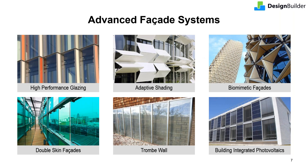Advanced facade systems involve variations on the basic facade elements. These include high-performance glazing sometimes integrated with other services and technologies, such as adaptive movable shading, biomimetic features which emulate natural designs and processes, double-skinned facades, Trombe walls, or electricity generation via BIPVs. Along with the basic elements, these advanced systems also aim to address multiple facade design requirements simultaneously. Let's see how DesignBuilder's integrated design toolkit can handle these simple and complex facades.